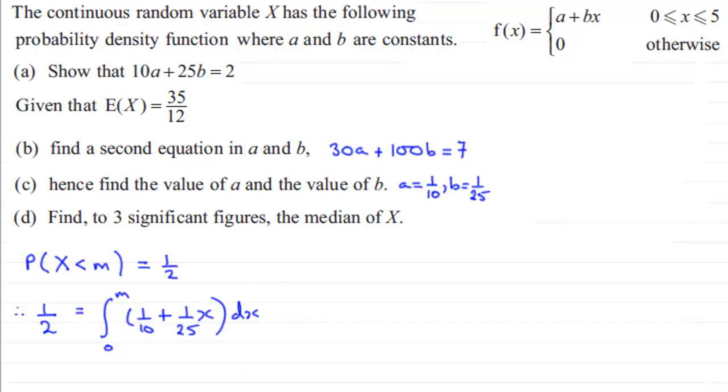So if we do integrate that, what are we going to get? Well, let's just see. We've got our half here. So therefore, a half equals and the integral of 1/10 is going to be 1/10 x. And then the integral of 1/25 x is going to be, well, we're going to add 1 to the power. So it's going to be x squared over 2 and multiply it with the 25 and you've got x squared over 50.